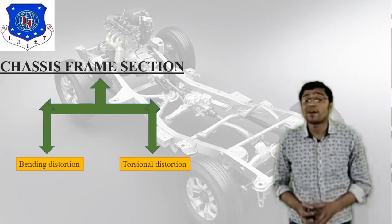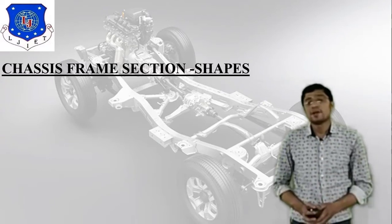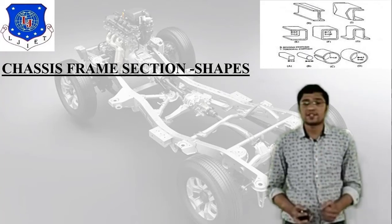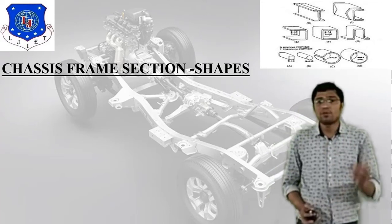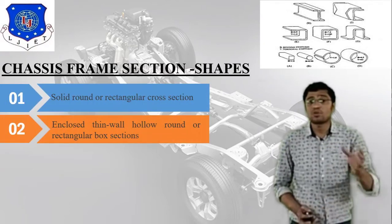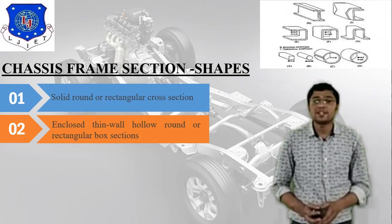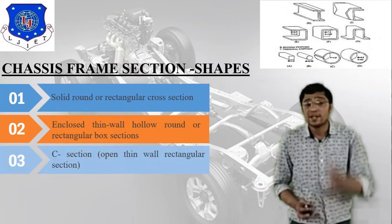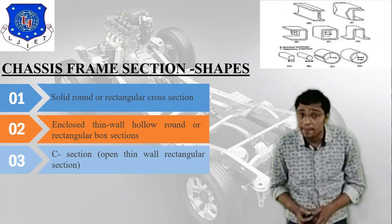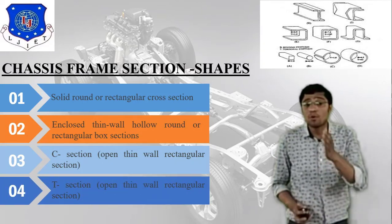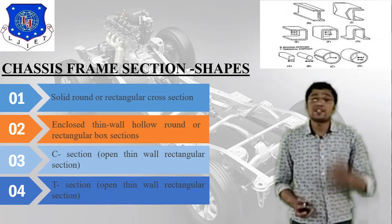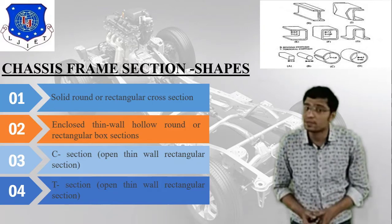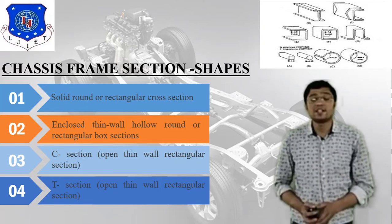Passenger capacity and size of the vehicle are also important parameters. According to requirement, we can use any section. In the image you can find I section, C section, T section, circular section, and square section. There are mainly four or five different types: solid round or rectangular cross section, enclosed thin wall section, C section as open thin wall rectangular section, and T section also as open thin wall rectangular section.